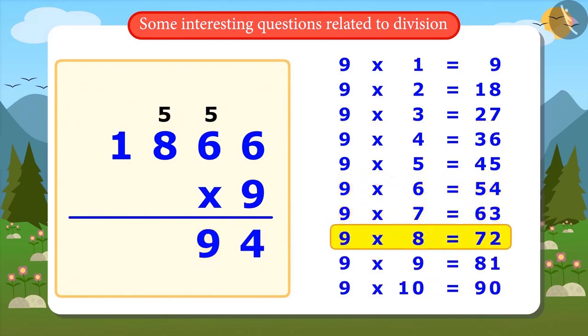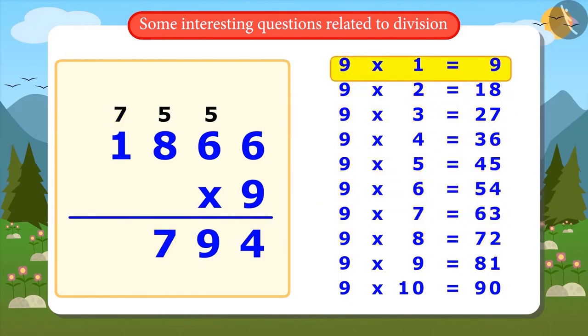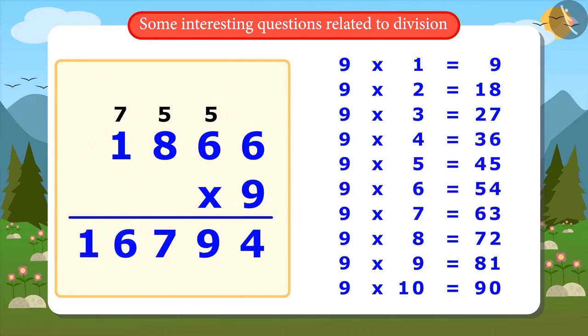9 sixes are 54. Adding 54 and 5 will be 59. We will keep 5 and 9 at their designated places. 9 eights are 72. 5 added in 72. Then the answer came 77. Similarly, 77 will be written in this way.